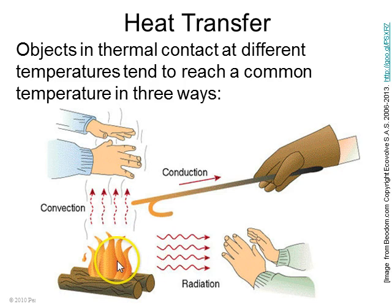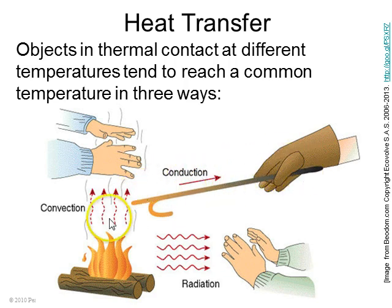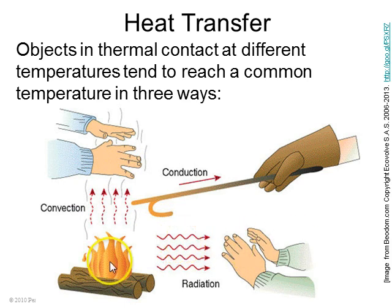The first mode is conduction. The fire is hot, your hand is cooler, and so heat will be conducted along this iron rod. There's convection, where actual currents of air can carry heat from fire to your hands. And radiation, which is where electromagnetic waves carry heat from fire to your hands.